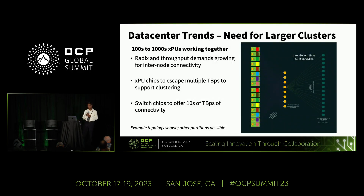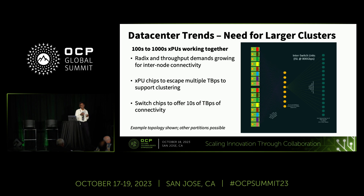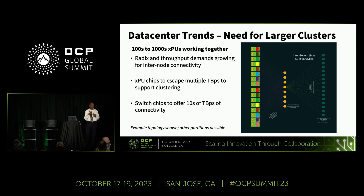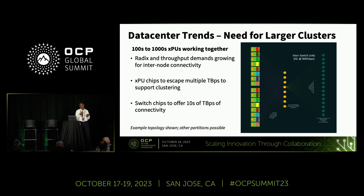If you look at the trends, you'll see the need for larger clusters. Today it is heterogeneous — there are CPUs, GPUs or accelerators, and memory that is attached, and all these are interconnected. The multicolored rectangles represent accelerators or GPUs, and the circles behind them are CPUs. It doesn't have to be one-to-one; it could be two CPUs for every eight GPUs. The traditional way was with the top of the rack and a NIC in between, but this is more of a back-end network view.